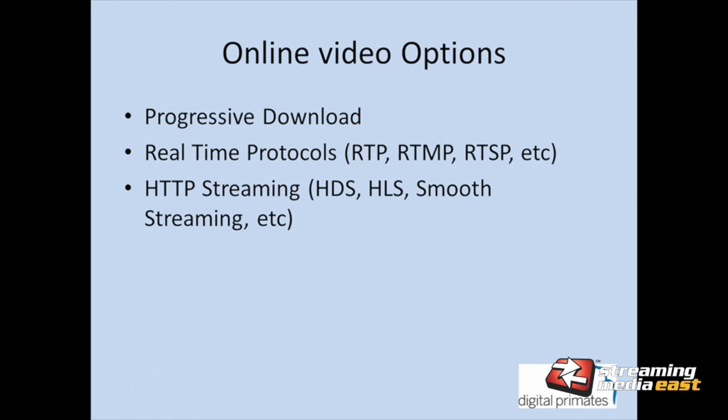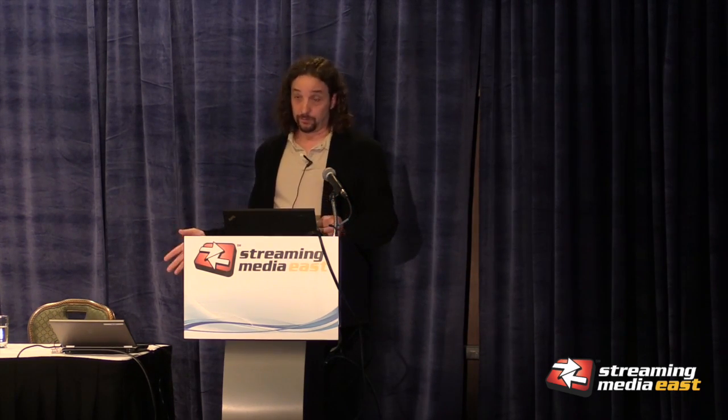If you're doing any sort of streaming video, we've got two primary options. We can do video as a progressive download — one video file sitting on a server comes down over time and plays back. A real benefit of progressive download is that it works fairly ubiquitously. Now that H.264 is available in almost all browsers, progressive download works almost everywhere. The downside is there's no real way to do adaptive bit rate.